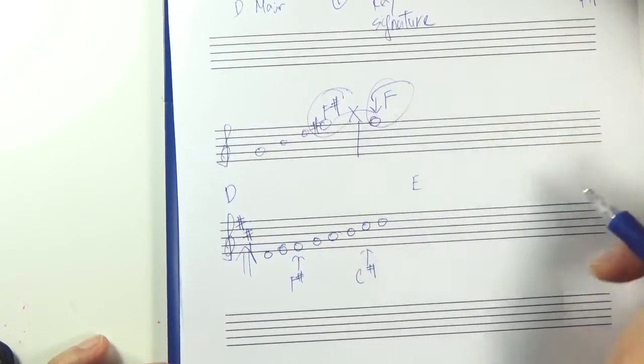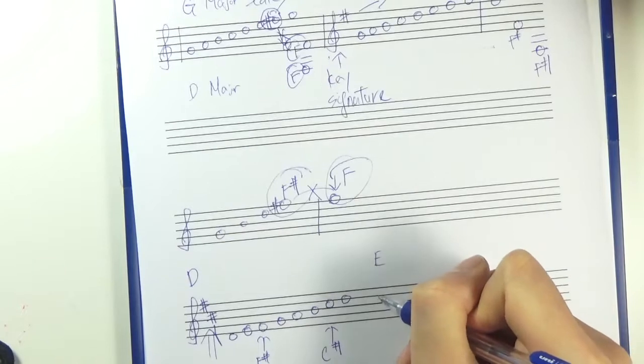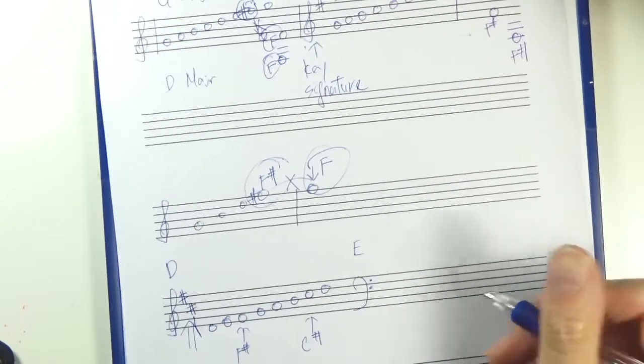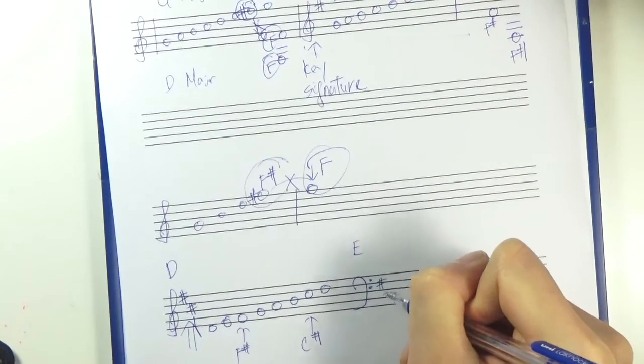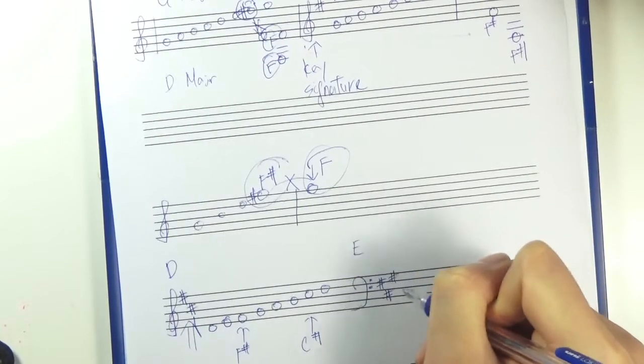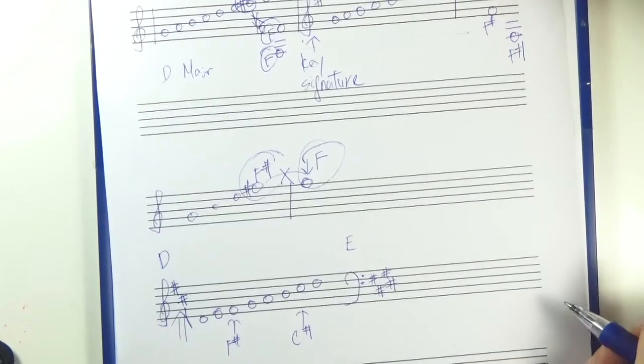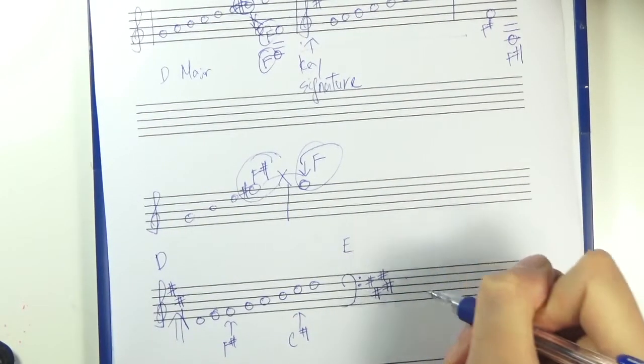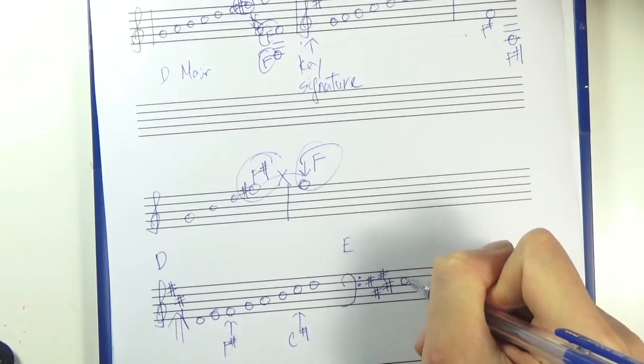So let's do E major. So let's do it in the bass clef. So we should have four sharps, right? So F, C, and then we have G, and then we have D. So let's start with E note. So let's start. It's okay. I think we can start here.